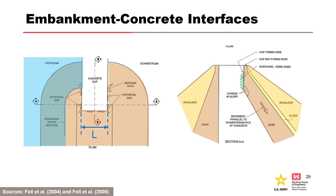Other places to consider include any interface of the embankment with a concrete structure. Where there is a wraparound junction between a concrete gravity dam and an embankment dam, differential settlements may result in a crack or gap adjacent to the wall, with the potential for poor compaction. Monolith sections with overhangs are sometimes used on upstream and downstream bases and can result in settlement and a gap beneath them, effectively reducing the seepage path length to the width of the monolith since full reservoir head would be transferred to the end of the monolith.